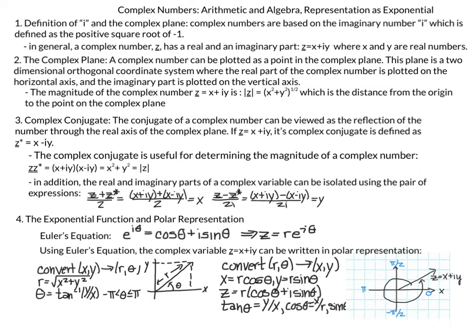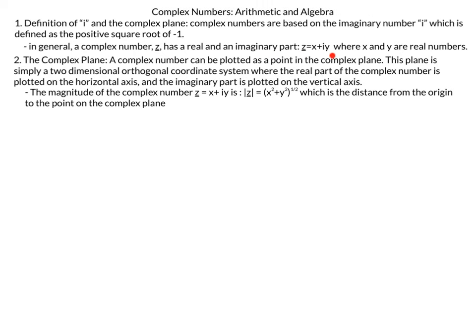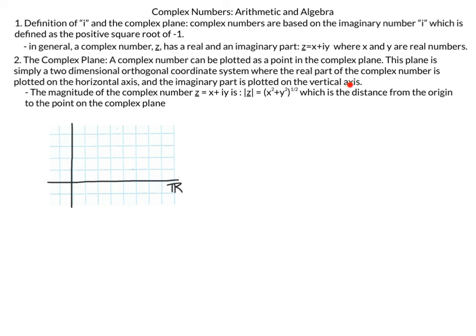Our next topic is the complex plane. A complex number can be plotted as a point in the complex plane, which is simply a two-dimensional orthogonal coordinate system. The real part is plotted on the horizontal axis and the imaginary part on the vertical axis. If we have 2 plus 3i, we go 2 units on the real axis and 3 units up on the imaginary axis. The point i is a purely imaginary number — no real component — sitting one unit up on the imaginary axis.